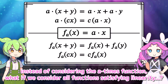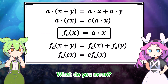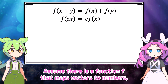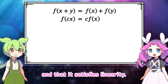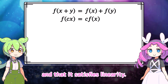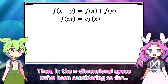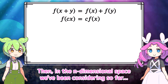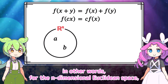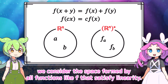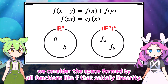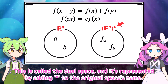These two properties of the a times function together are called linearity. Now, let's shift our thinking: instead of considering the a times function, what if we consider all functions satisfying linearity? Assume there is a function f that maps vectors to numbers and satisfies linearity.